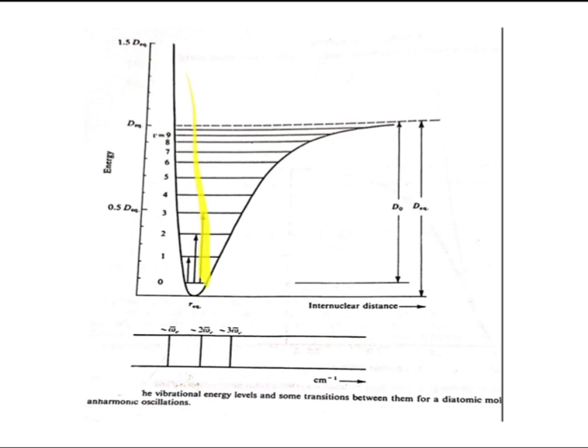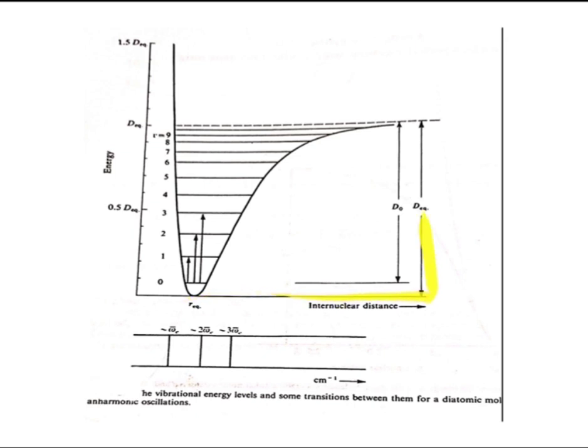For a simple harmonic oscillator we would get a perfect parabola, but for the anharmonic oscillator we do not get a perfect parabola due to dissociation of the molecule into atoms. We calculate the dissociation energy as D₀ from the ground state and D_eq from the equilibrium position. This curve is called the Morse potential curve.